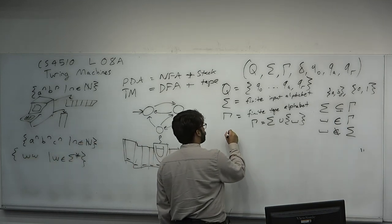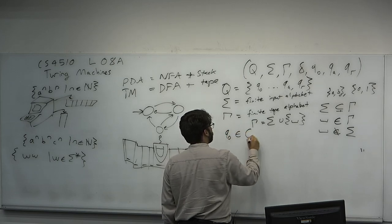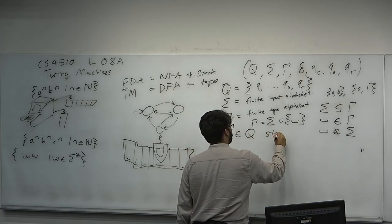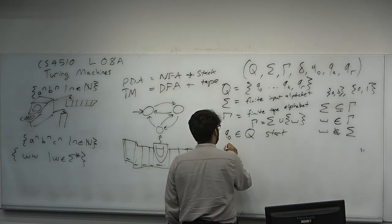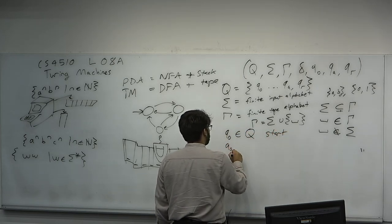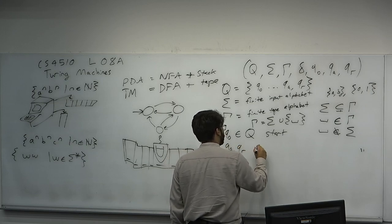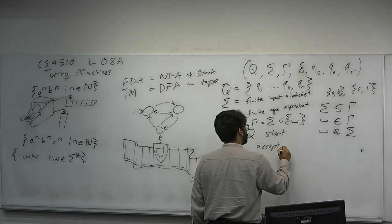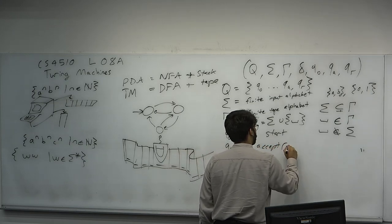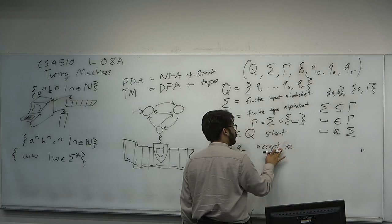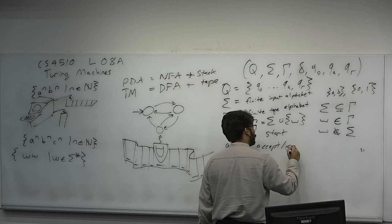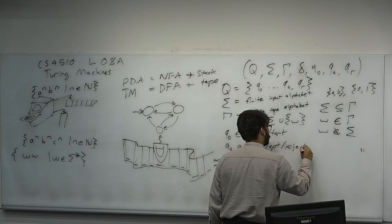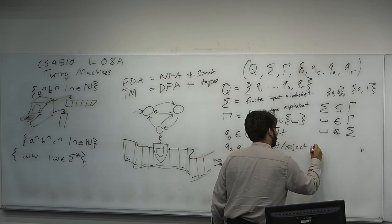The tape is pre-allocated with blanks. Q0 is the special start state — it's just how you start. QA and QR are the accept and reject states respectively.